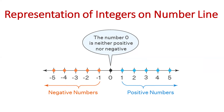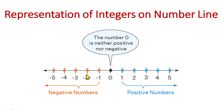Integers aren't just positive and negative numbers living together in harmony — they have zero, the ultimate peacekeeper, sitting in the middle, making sure the positives and negatives don't get into too much trouble. Think of zero as that one friend who doesn't take sides. It's not positive, it's not negative — it's just zero, cool under pressure, totally neutral. Positive numbers are on the right side, negative numbers on the left side, and zero is neither positive nor negative.